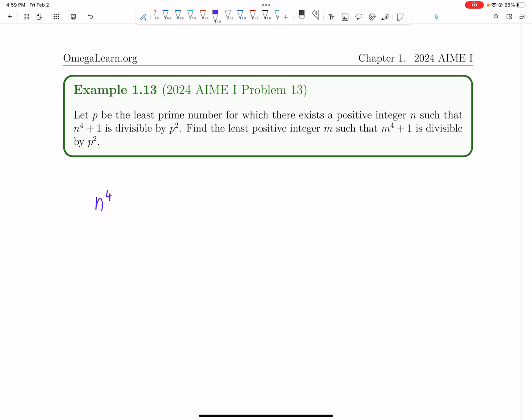So basically, what is the smallest prime such that n to the 4 is negative 1 mod p squared?